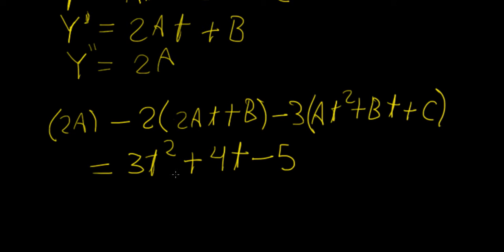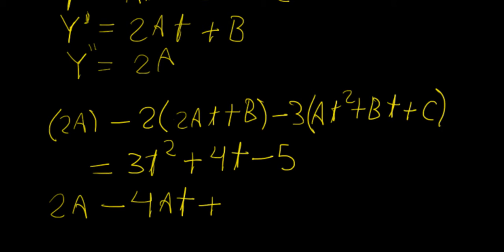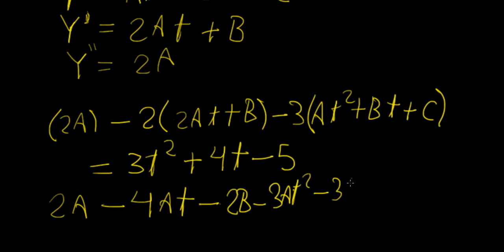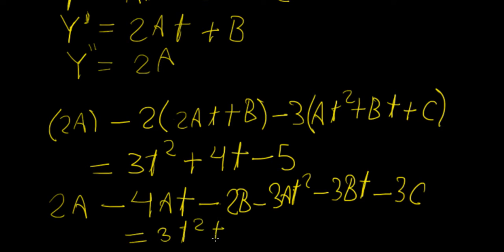So we're going to expand this out. We're going to have 2a minus 4at minus 2b minus 3at squared minus 3bt minus 3c, and all of that is going to be equal to 3t squared plus 4t minus 5.